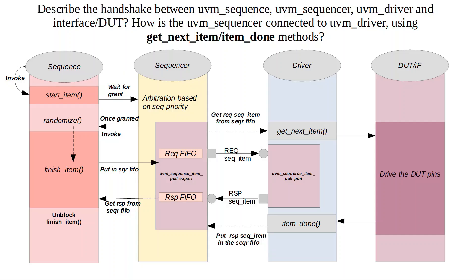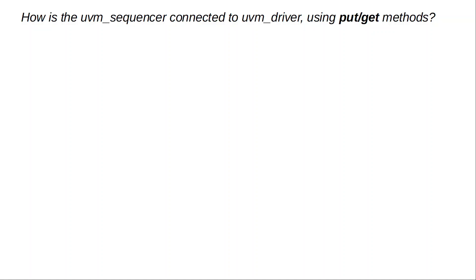Let's go to the next method combination, which is the get and put methods for the driver. The other question that can be asked is how is the UVM sequencer connected to the UVM driver, or the same protocol between the sequence, sequencer, driver, and DUT explained using get/put methods. This is more of an ad hoc way of doing the same thing, and is typically done when you are expecting a response back to the sequence from the DUT — for instance, monitoring something and wanting to send the response back to the sequence.